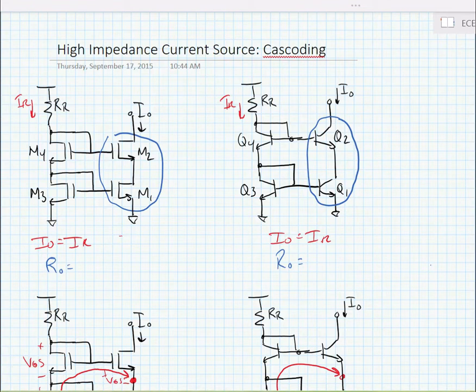Now if we assume that all the transistors M1 through M4 are equal, or Q1 through Q4 are equal, we can say that the reference currents are equal to the output currents.